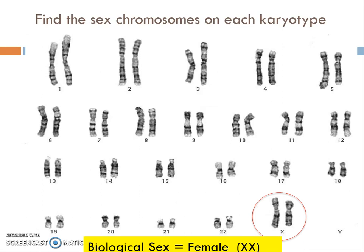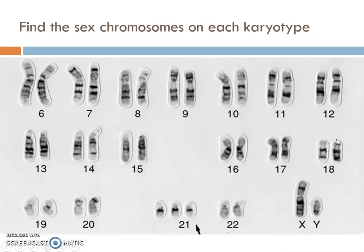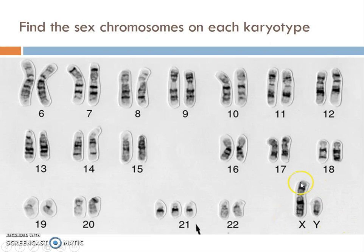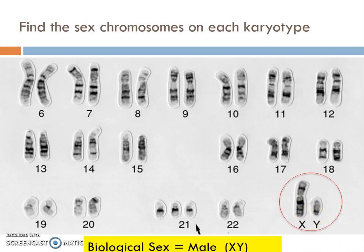This person has two pairs for everything else, meaning they are biologically normal for chromosome number. Now in this next example we're only showing chromosomes 6 through 23 — chromosomes 1 through 5 are not shown so we can see better. Practicing determining biological sex: looking at the 23rd pair at the bottom right, I see a big chromosome labeled X and a little one labeled Y — so this is XY, a biological male.